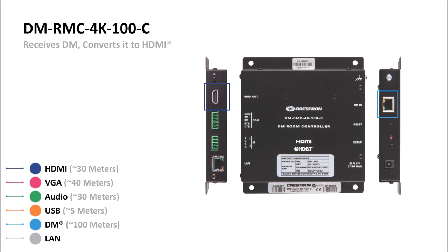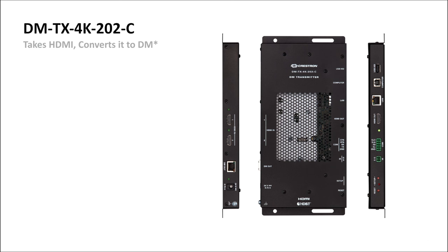You have the DM in and the HDMI out. Looking at the transmitter — something we'd probably mount under a table — it has a DM out so this would be sent to the control system, and it has an HDMI in, so this is where you'd plug in your laptop.